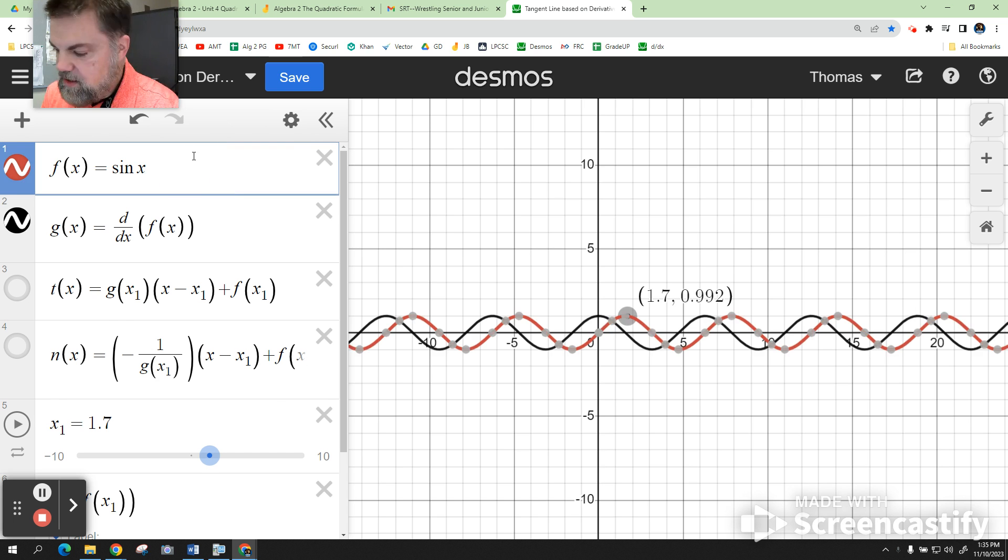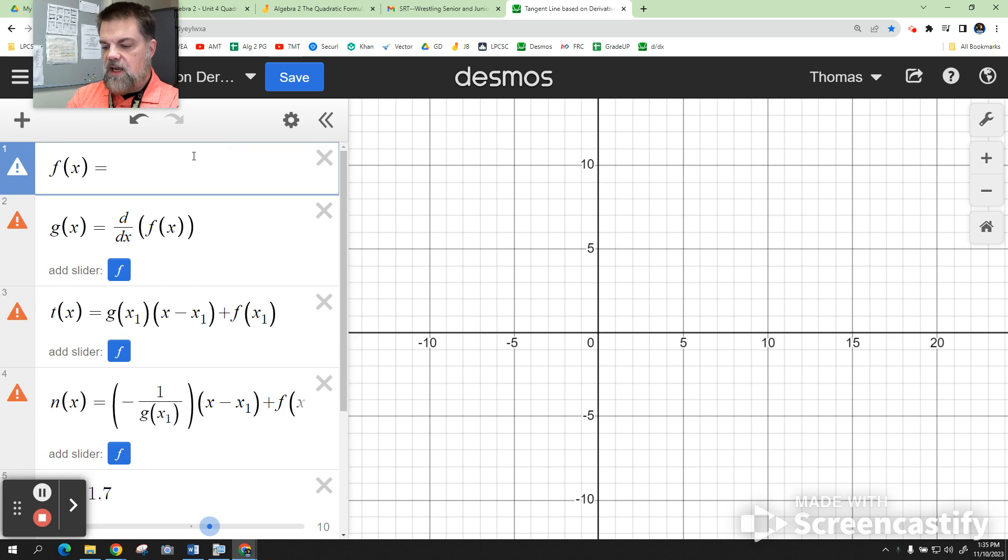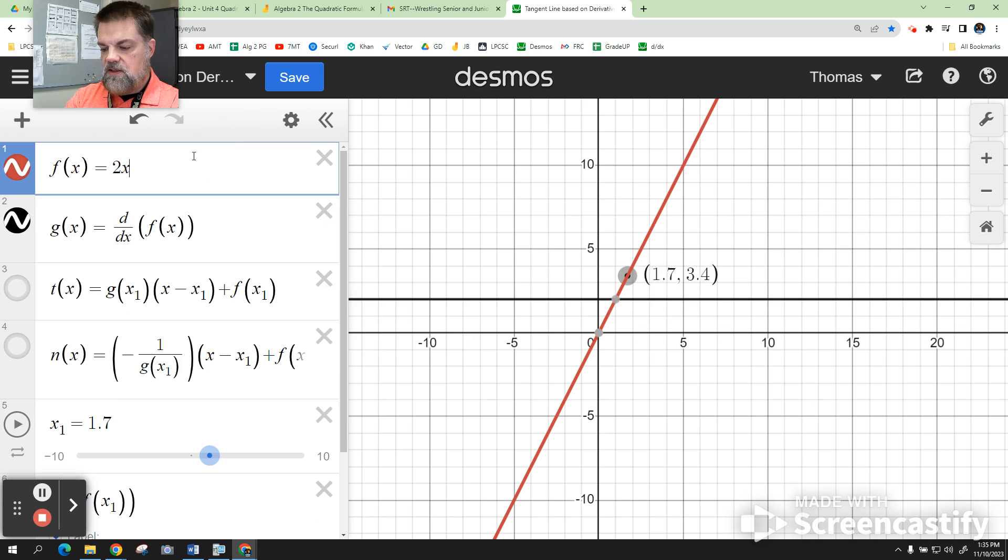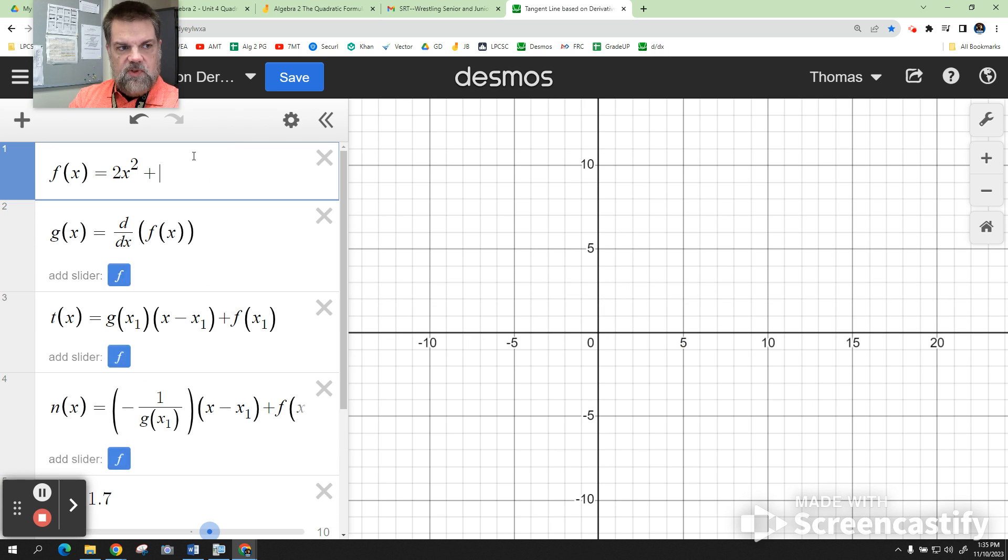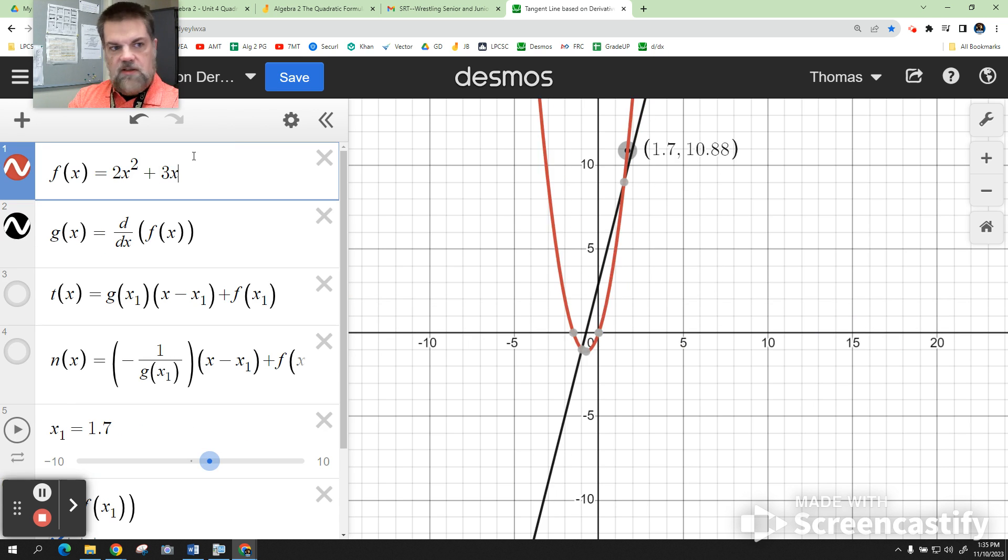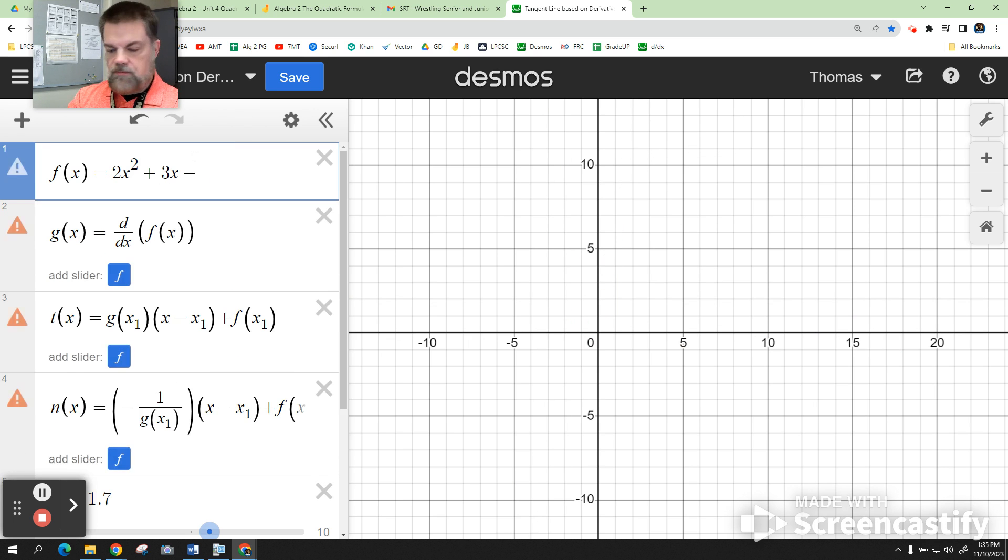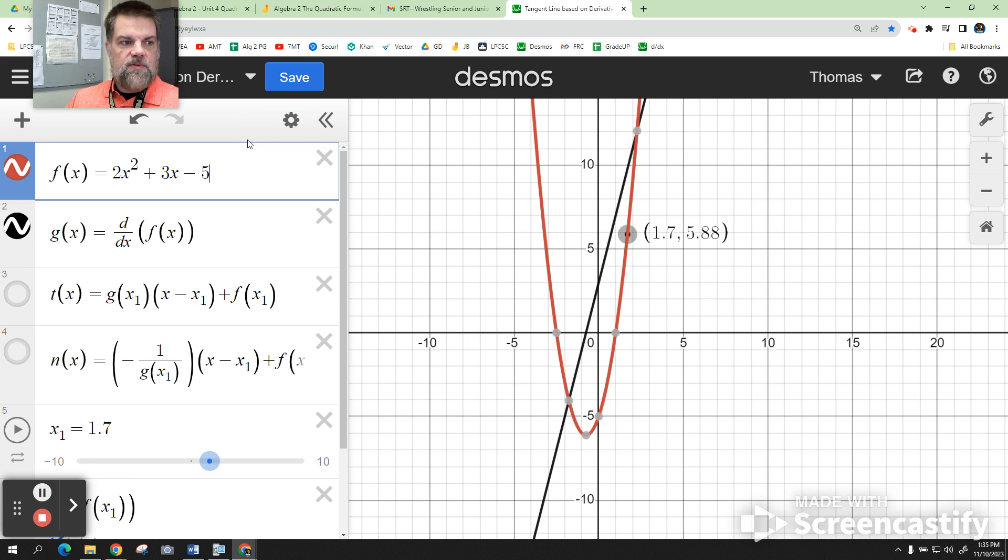What's nice about that is I could put in any function. So if I say 2x squared, notice that it graphs a linear function. It just creates the function and the derivative.